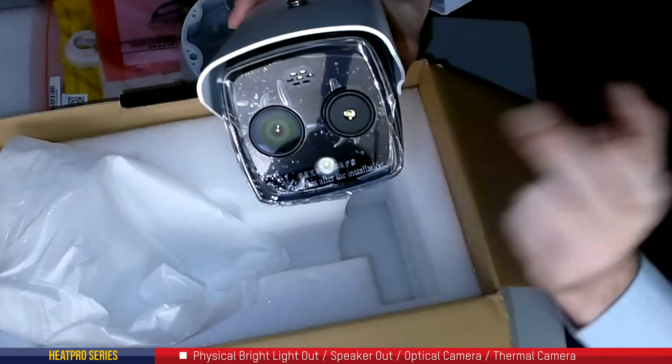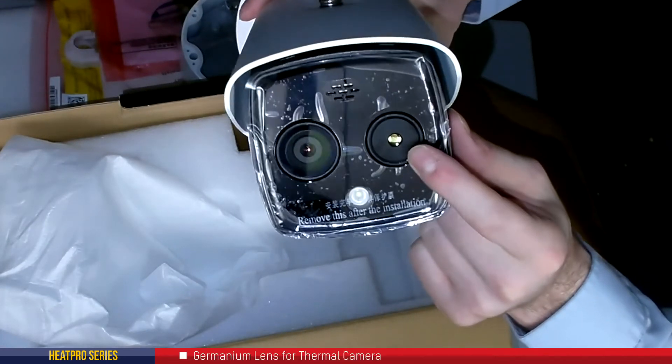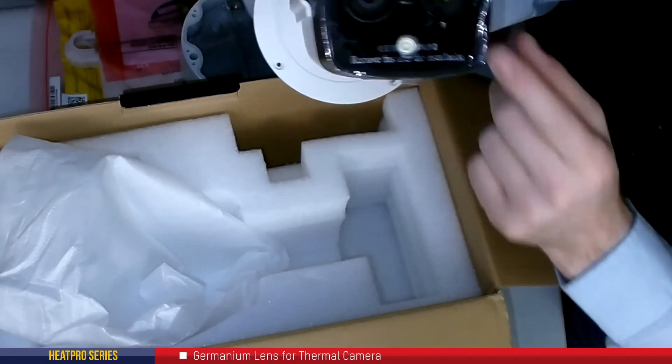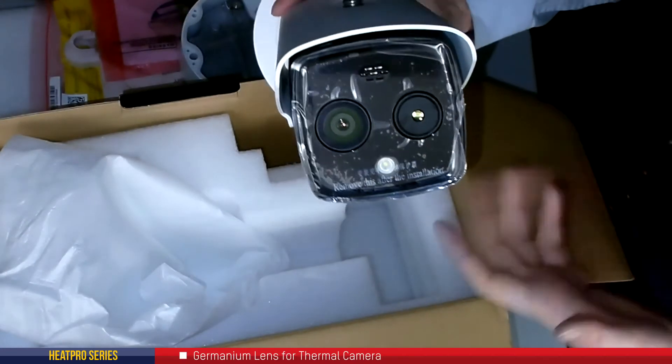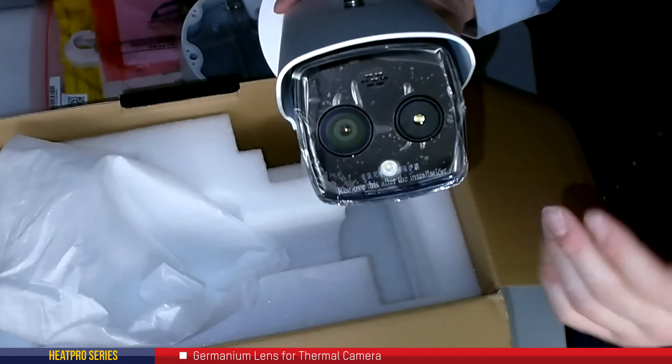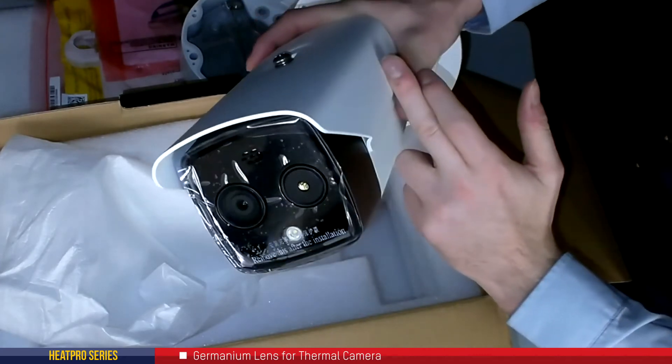Now the thermal camera has a different lens and sensor compared to the optical. This uses what's called a germanium lens, almost like a piece of metal, and that is what's going to reflect the visible light spectrum and therefore only allow the infrared radiation to penetrate through that lens and hit the image sensor in the back.